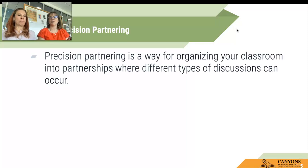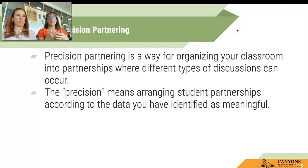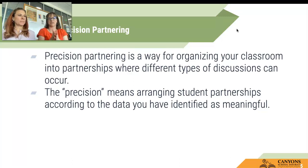So we're going to go over what precision partnering is first. This is something we've talked about a lot in Canyon School District, so most of this will be a reminder. It's really a way of organizing your classrooms into different types of partnerships so that different types of discussions can occur. Precision partnering is about how you're arranging the student partnerships using data — that's the really big part of precision partnering, the data piece.